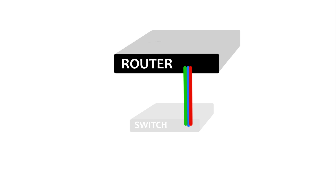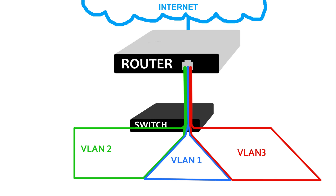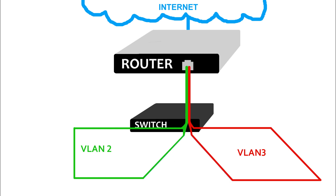As we go through this example, you'll see why in the diagram they call it router on a stick — because it kind of looks like an ice cream stick when you get done. With router on a stick, you can pass traffic for multiple VLANs from the switch to the router, have the router route traffic between those VLANs with its Layer 3 capability, and send that traffic back to the switch to the proper VLAN. For this example, I'm using only two VLANs to demonstrate this process, but it can be used for multiple VLANs.